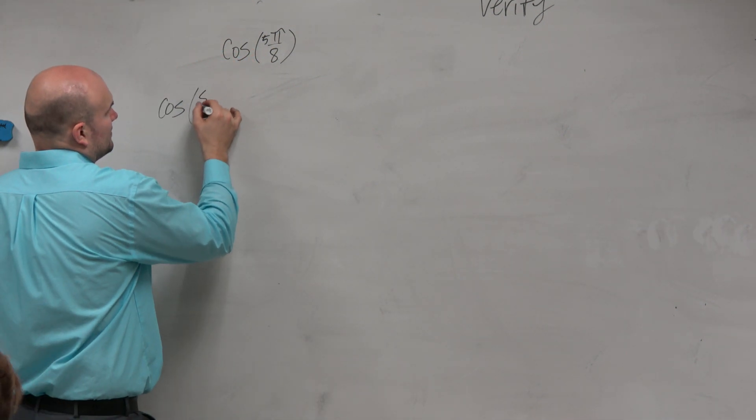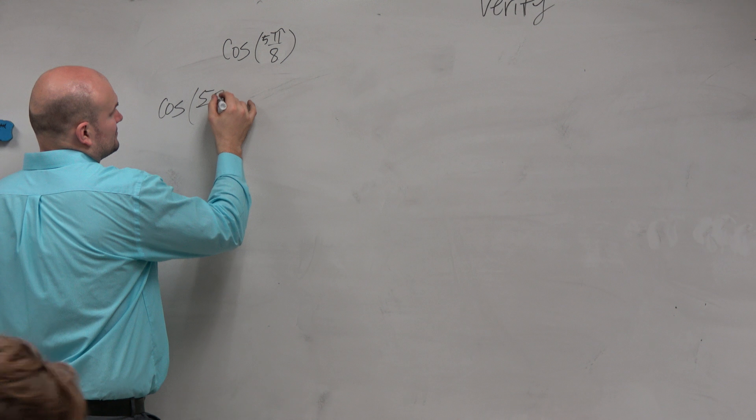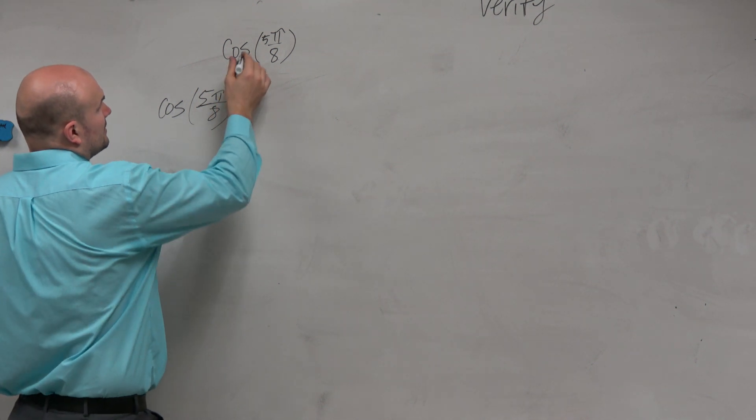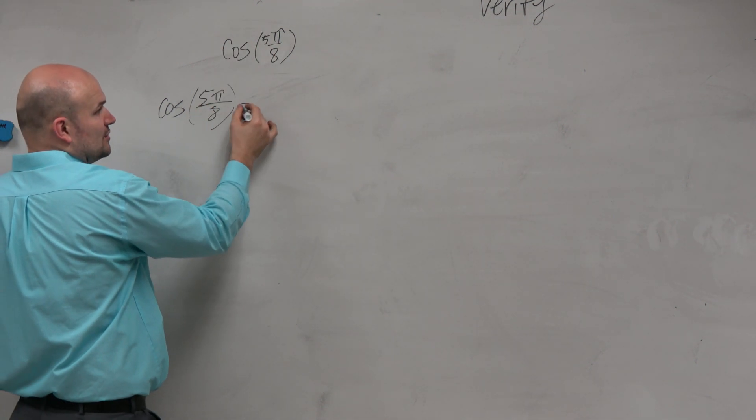So we have 5π over 8. Since that's in the second quadrant, cosine is going to be negative.